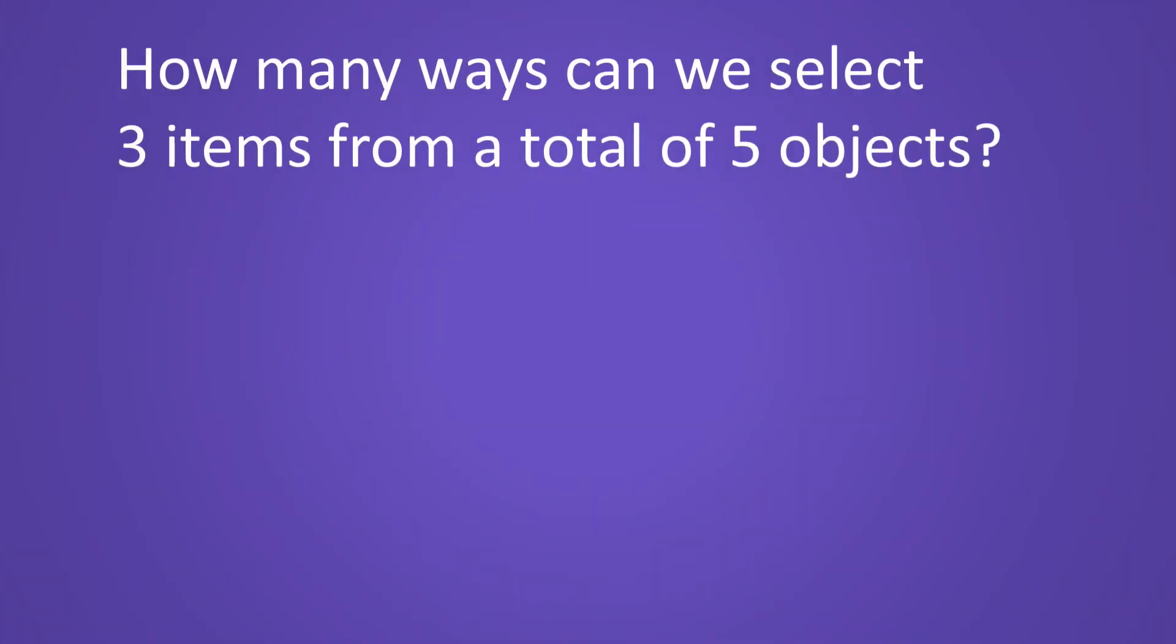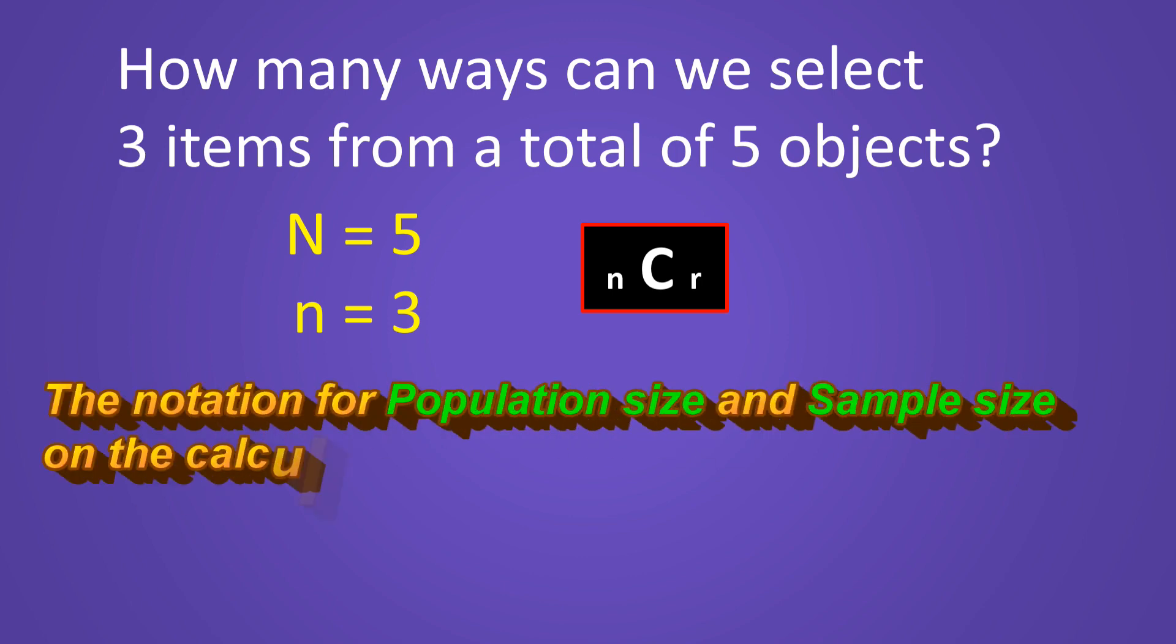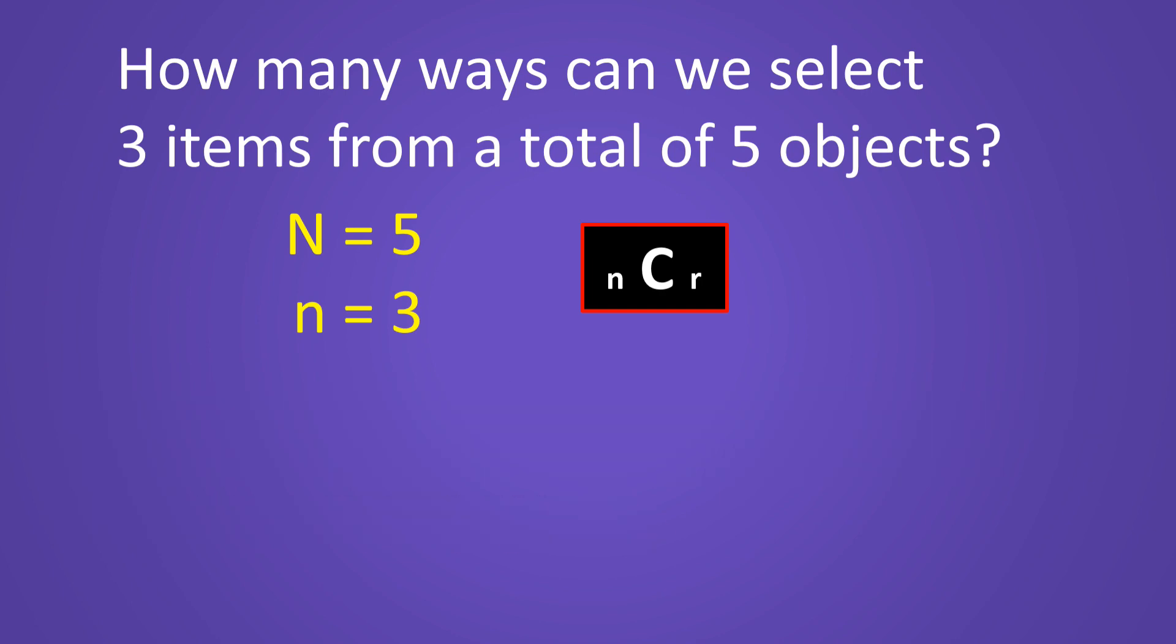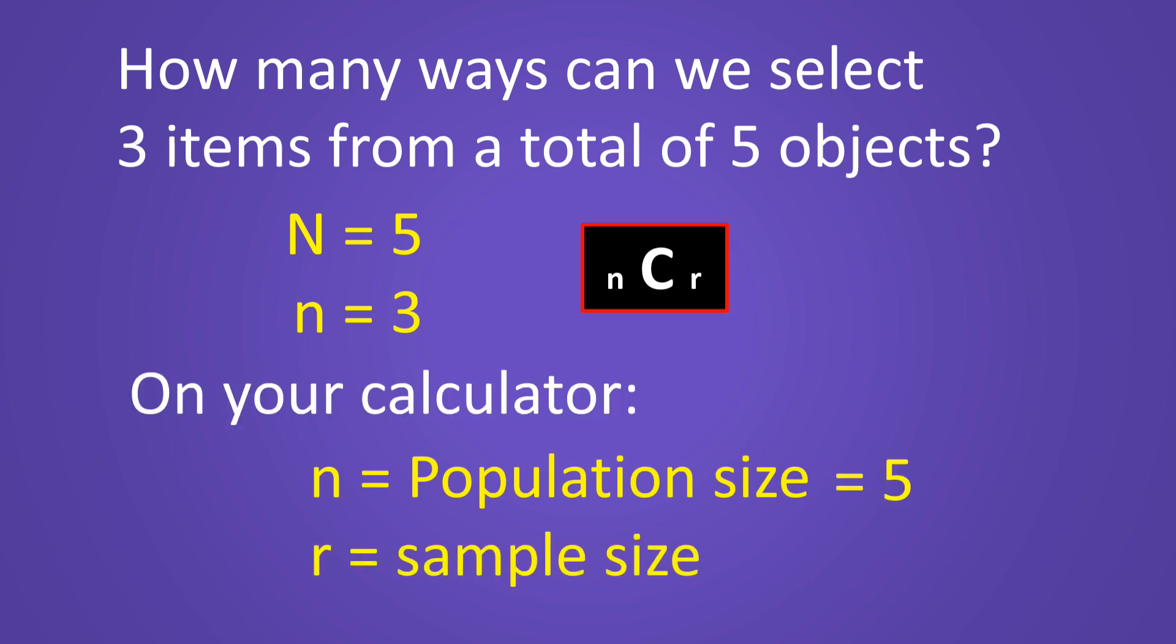Now let's take a look at how we can use the calculator to accomplish the same thing. Let's say we want to know how many possible ways or outcomes there are if we want to select three items out of five. If we were to use the combination formula, we would define big N as five and little n as three since the population size is five and the sample size is three. The notation your calculator uses, however, looks like this. Little n, then a big C for the combination, and then a little r. The notation on your calculator is different than what is typically used in a formula. The little n on the calculator is the same as the big N in the formula. That is, the little n on the calculator is the population size. The little r refers to the sample size.